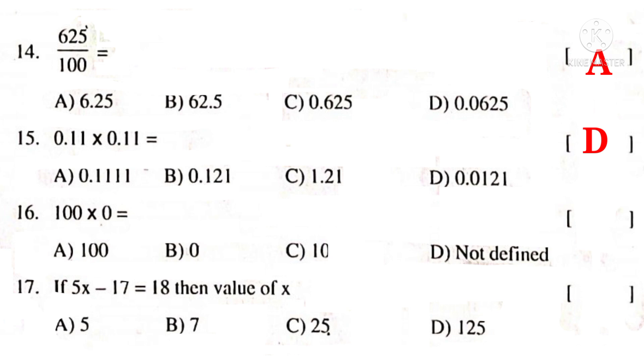100 into 0. Multiplication by 0 with any number gives always 0. So, the correct choice is B.